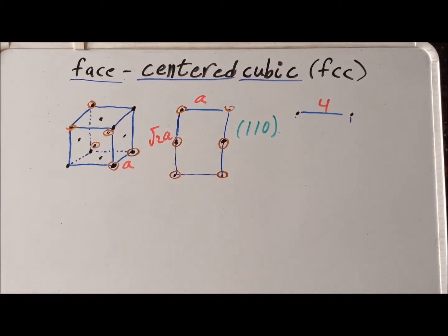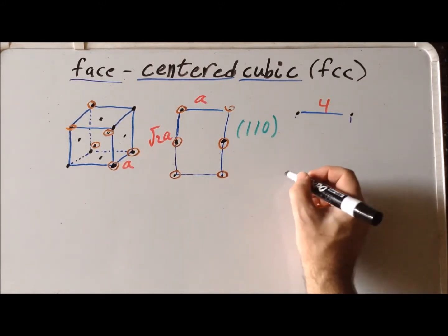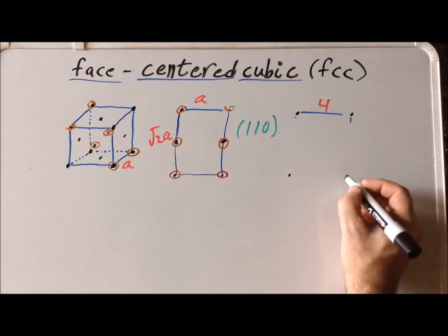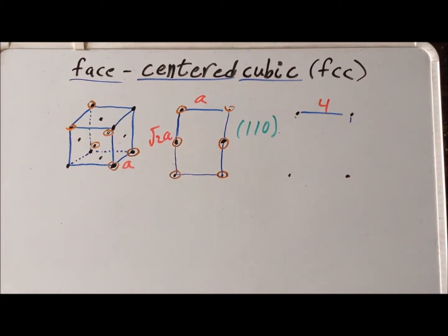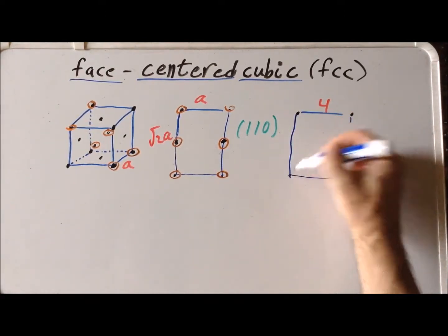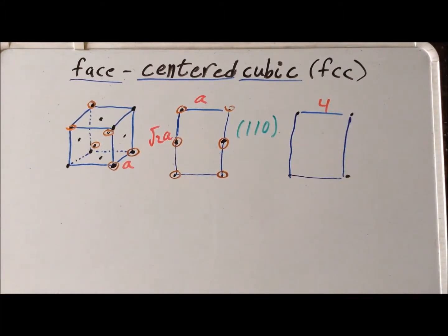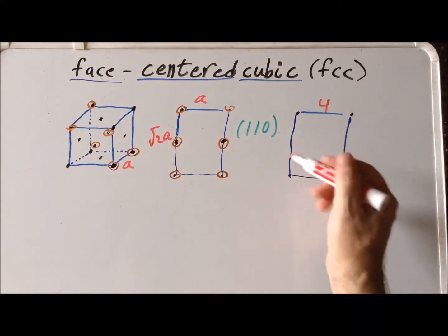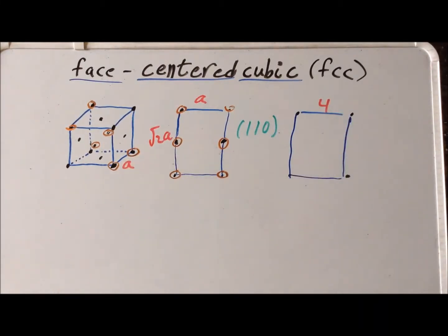To model this particular plane in Lego, again, we can proceed by analogy with our simple cubic case. And we recall that the dimensions for the simple cubic 110 plane in Lego, we did by having a by 4, and then approximate the square root of 2 times a as 6. This particular arrangement would be what we would have for the simple cubic 110.